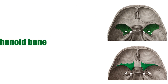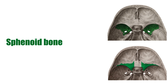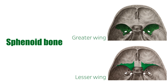The sphenoid bone has a greater wing and a lesser wing. The greater and lesser wings of the sphenoid bone make up the posterior wall of the bony orbit. They contain all three orifices including the optic canal and the superior and inferior orbital fissures.